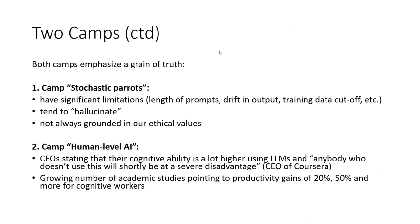Going with the stochastic parrots camp, it is true that these models still have significant limitations: the length of what you can put in, output drift, training data cutoffs, and they do tend to hallucinate and aren't always grounded in our ethical values. Speaking to the human-level AI camp, there is an increasing number of people who observe that these models really do add significant brain power. The CEO of Coursera was on record saying anybody who doesn't use this will shortly be at a severe disadvantage. There are growing academic studies pointing to productivity gains of 20, 50 percent or more for cognitive workers.